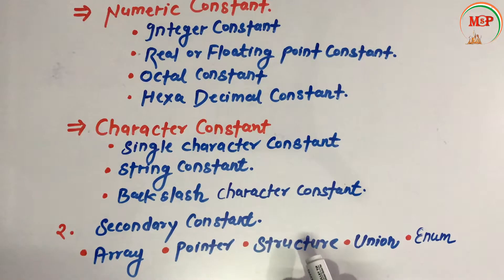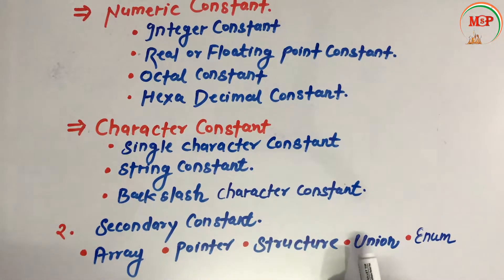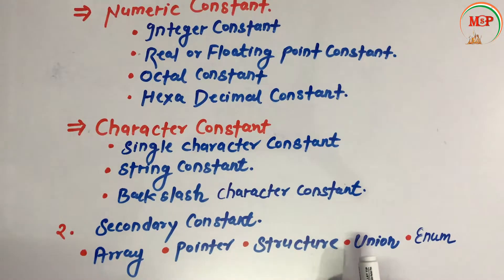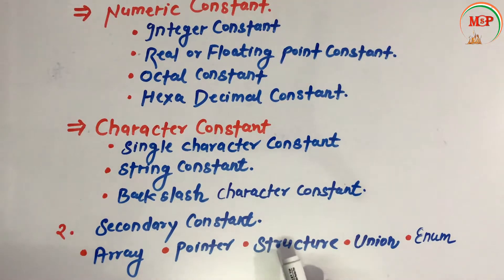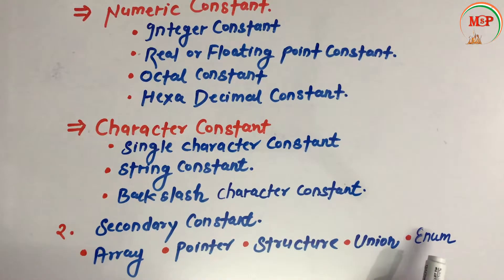Structure is a collection of different types of data elements, to be covered in a later chapter. Union is similar to structure, but the difference is that union assigns a single memory for all data types — the largest one — whereas structure assigns separate memory for each member. Enumeration will also be covered in a later chapter.